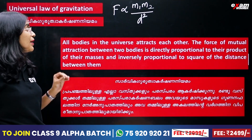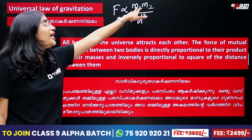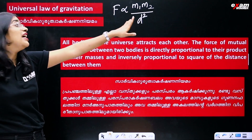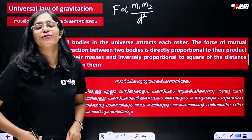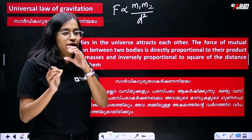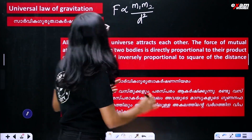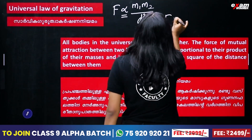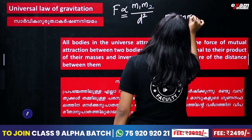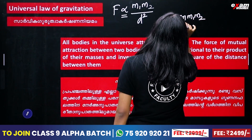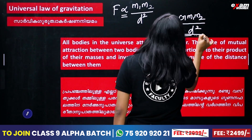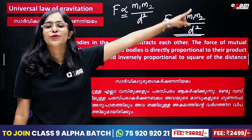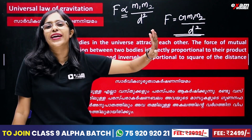And inversely proportional to the square of the distance between them. We call it the Universal Law of Gravitation. With the proportionality sign, we have given the universal gravitational constant. That is, force of attraction between two objects: F is equal to G M1 M2 divided by D squared.